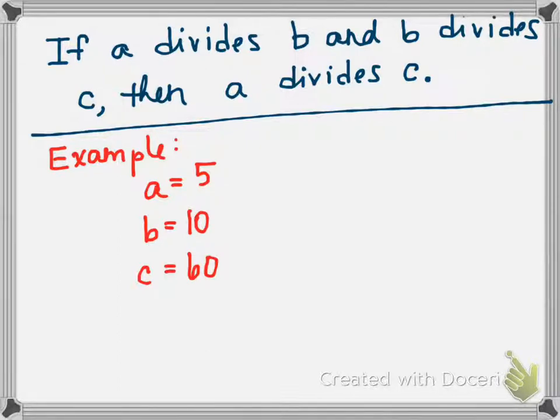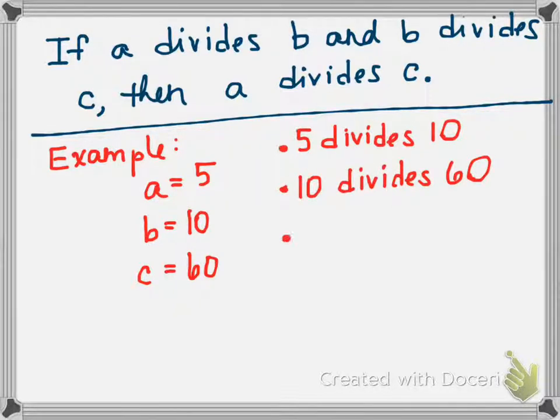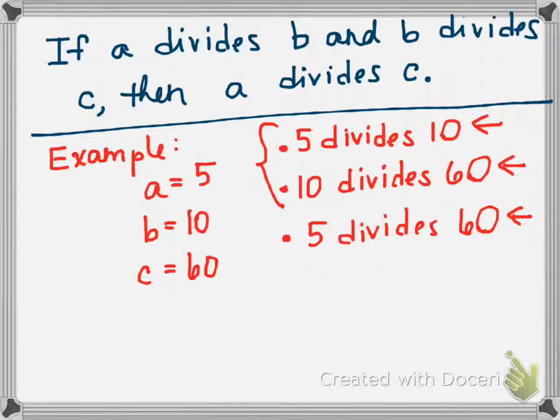So let's say A is 5, B is 10, and C is 60. So 5 divides 10, 10 divides 60, and 5 divides 60. So here is if A divides B, here is B divides C, and here is A divides C. And what about these two statements makes the conclusion that 5 divides 60? Now all of those are true.